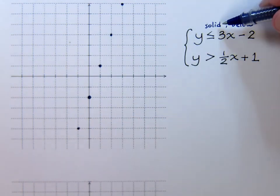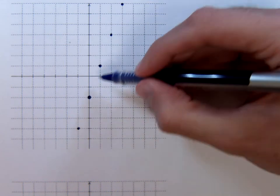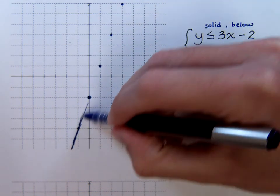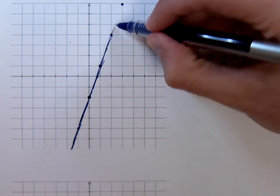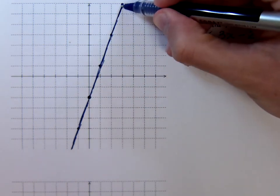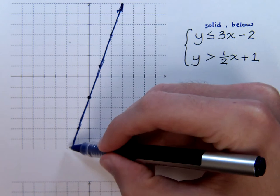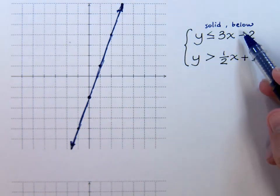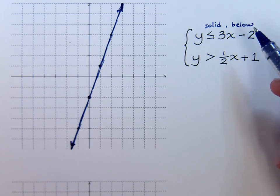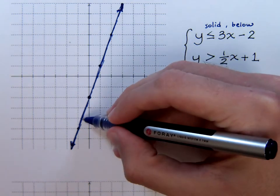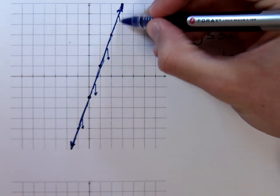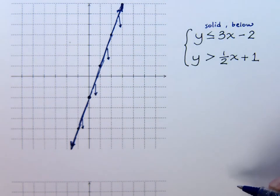We do have a solid line, which is why we can fill in the plotted points. Connect the dots to draw the line. We need to be shading below, but rather than shading the whole region now, we'll make a note to indicate that we'll be shading below this line.